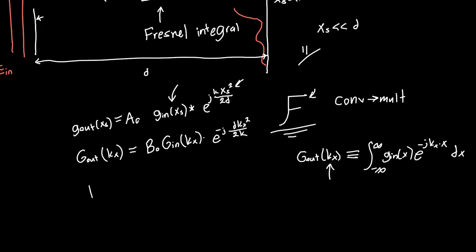And this allows me to figure out the system's transfer function H, which is just g_out as a function of k_x over g_in as a function of k_x. This is just equal to some coefficient B_0 times e to the minus j d k_x squared over 2k. And B_0 just contains some terms to make sure the units work out and make sure we have energy conservation from one plane to another.